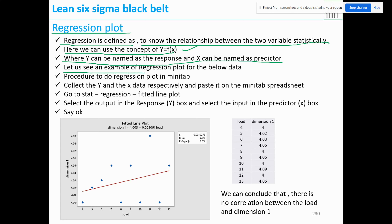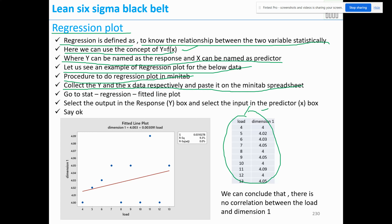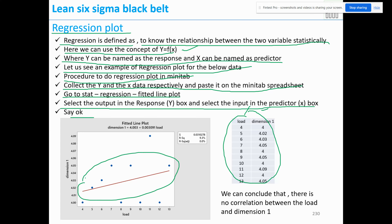Let us see an example of regression plotting. We have data with load and dimension — load is the input and dimension is the output. Procedure: collect Y and X data and paste it in the Minitab spreadsheet, go to Stat > Regression > Fitted Line Plot, select the output in the Response (Y) box and the input in the Predictor (X) box, and click OK.